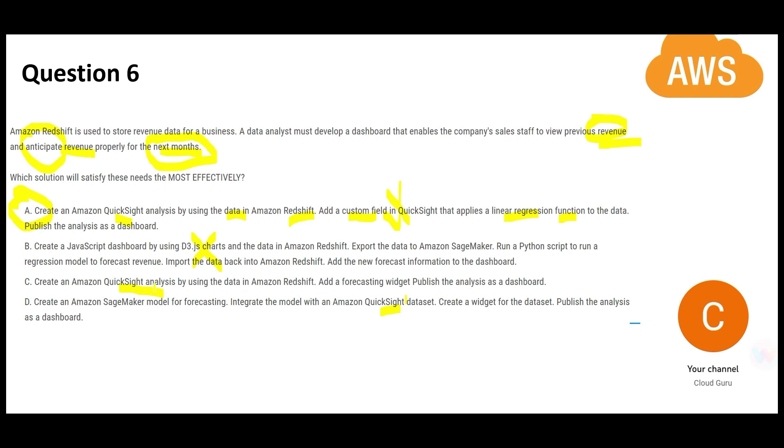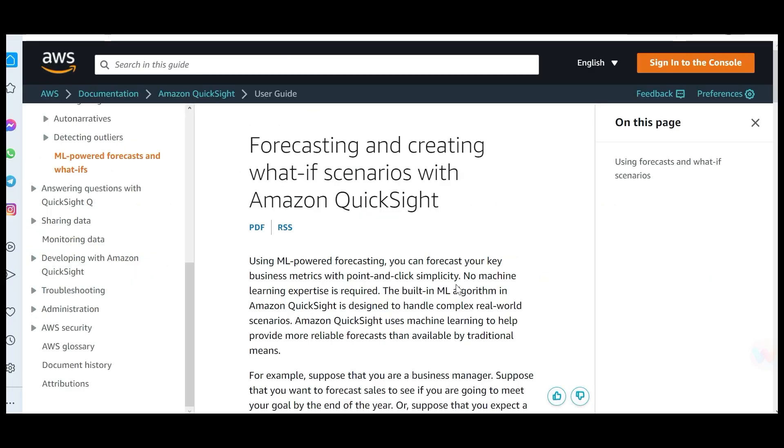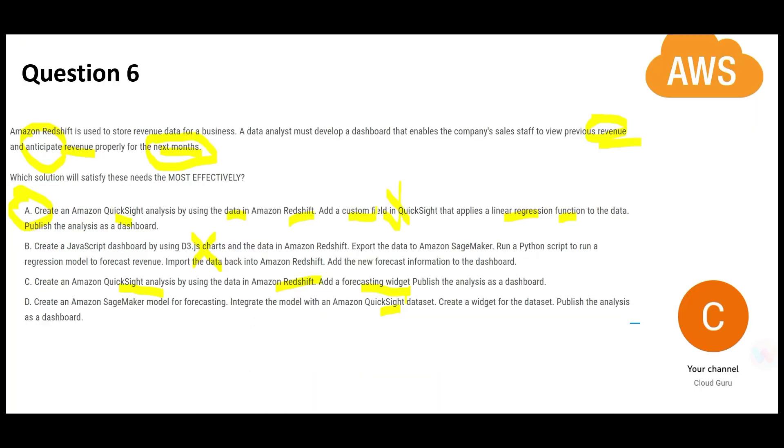See, C also—the first part is correct. It will use QuickSight and connect to Redshift. The second part tells you to use the forecasting widget. This is a feature available in QuickSight. It uses ML-powered forecasting techniques and can generate a reliable forecast. This portion addresses the requirement for next month, so this is correct.